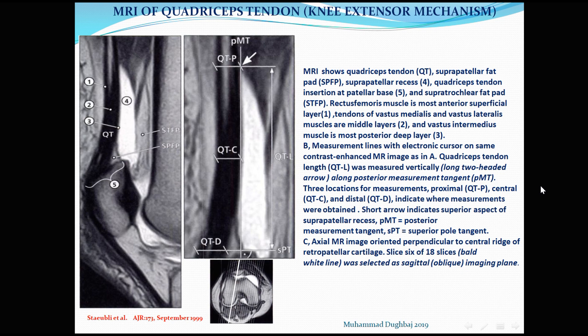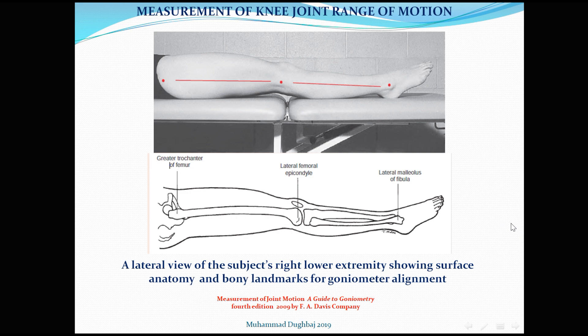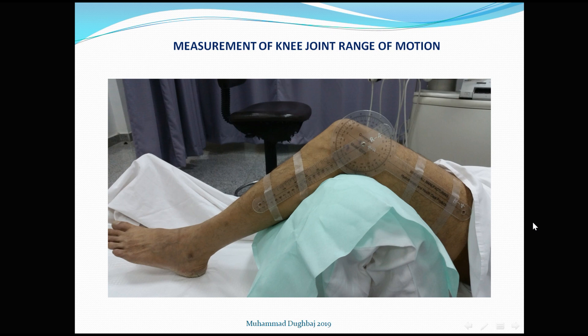Here we can see the suprapatellar fat pad — the small triangle — and the three components of the quadriceps tendon. This is how we perform standard goniometric measurements of extension and then flexion, and how we apply the goniometer during examination. We use a dynamic study of the quadriceps tendon to calculate the painful range of motion during both extension and flexion.